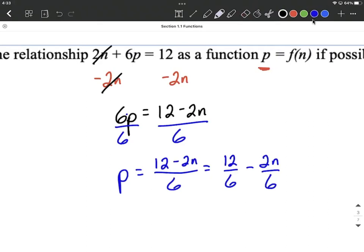And why I may want to do that is so that I get p on one side all by itself, and we can reduce this down a little bit. 12 divided by 6 makes 2, minus 2 over 6 is going to be the same thing as 1 third, so we can simply say n over 3. That means the same thing as 2n over 6.